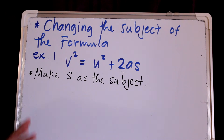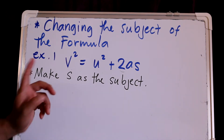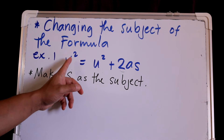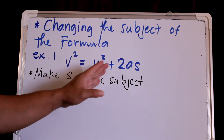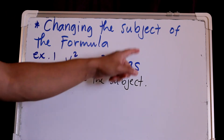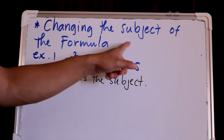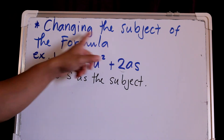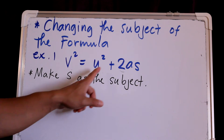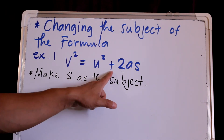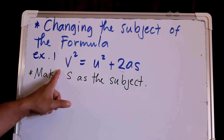When we change the subject of the formula, we will apply the rule of transposing one value to the other side of the equation. So if it has a positive value here, or plus, when you transfer that to the other side, it becomes minus.